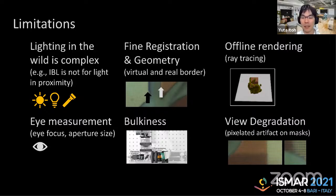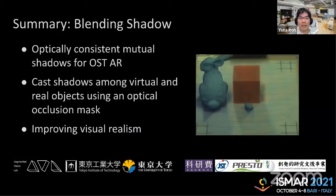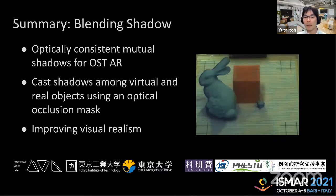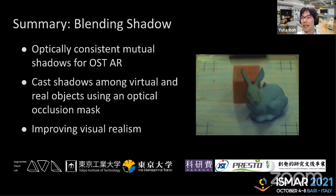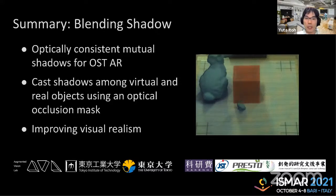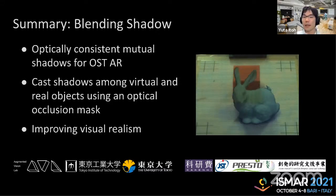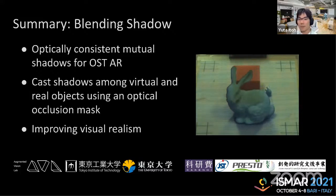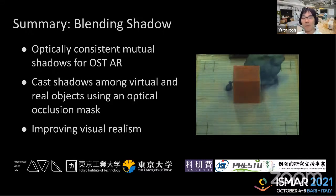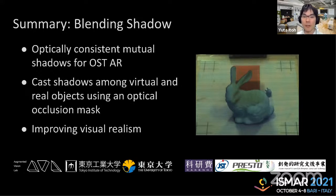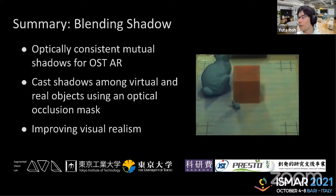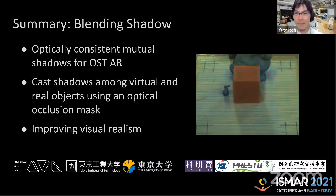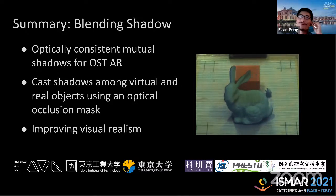In summary — blending shadows: we presented optically consistent mutual shadows for see-through AR which cast shadows between virtual and real objects, definitely improving realism. We didn't conduct subjective studies, and we welcome collaboration on perceptual studies. In the future we want to have a real real-time system. Thank you for listening, any questions?